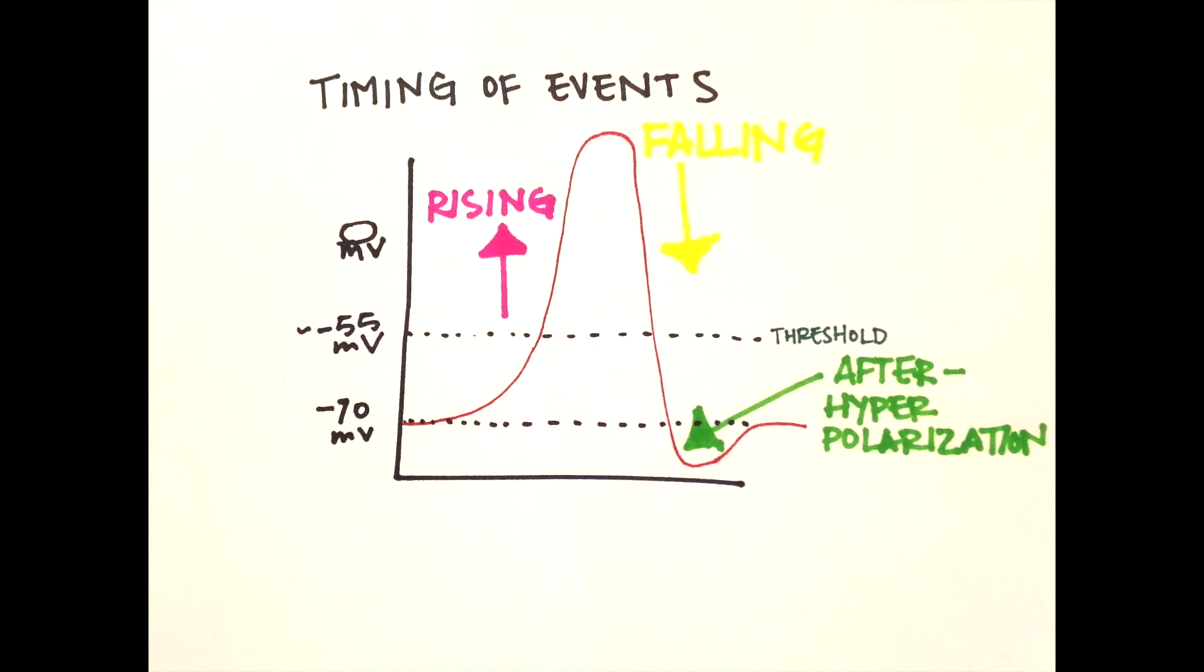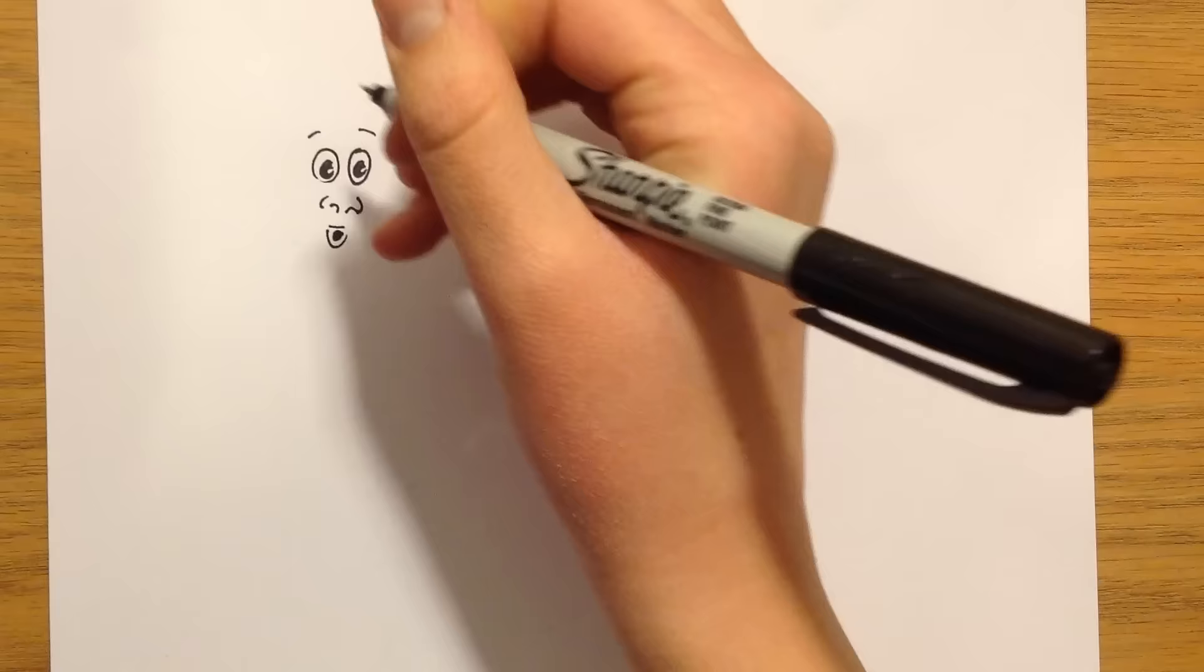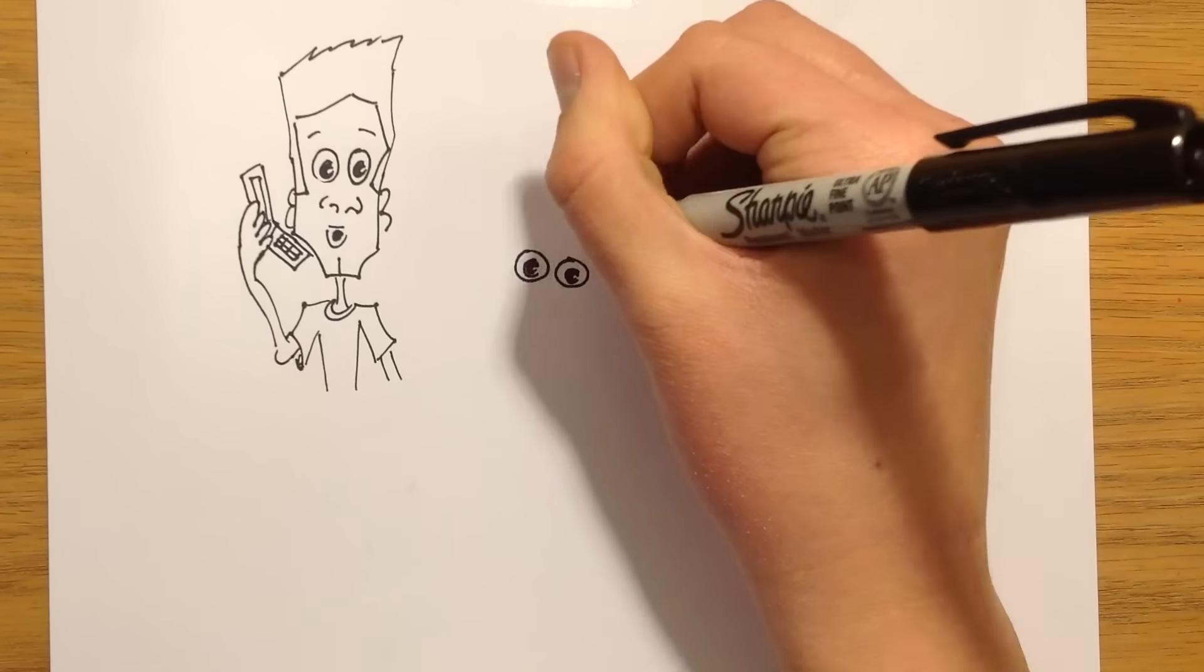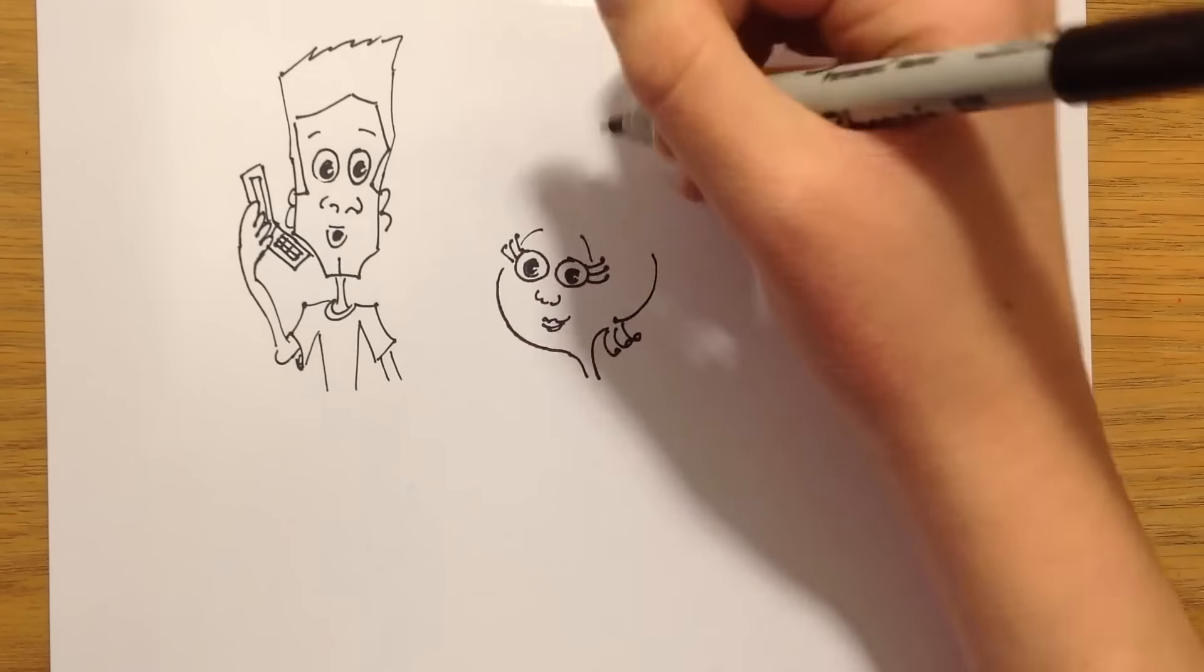Here is an analogy about a teenage boy and his young sister to help you remember the phases of an action potential. One average day, a teenage boy was talking to his girlfriend on the phone, having a pleasant conversation. His young sister enters the room begging for his attention.